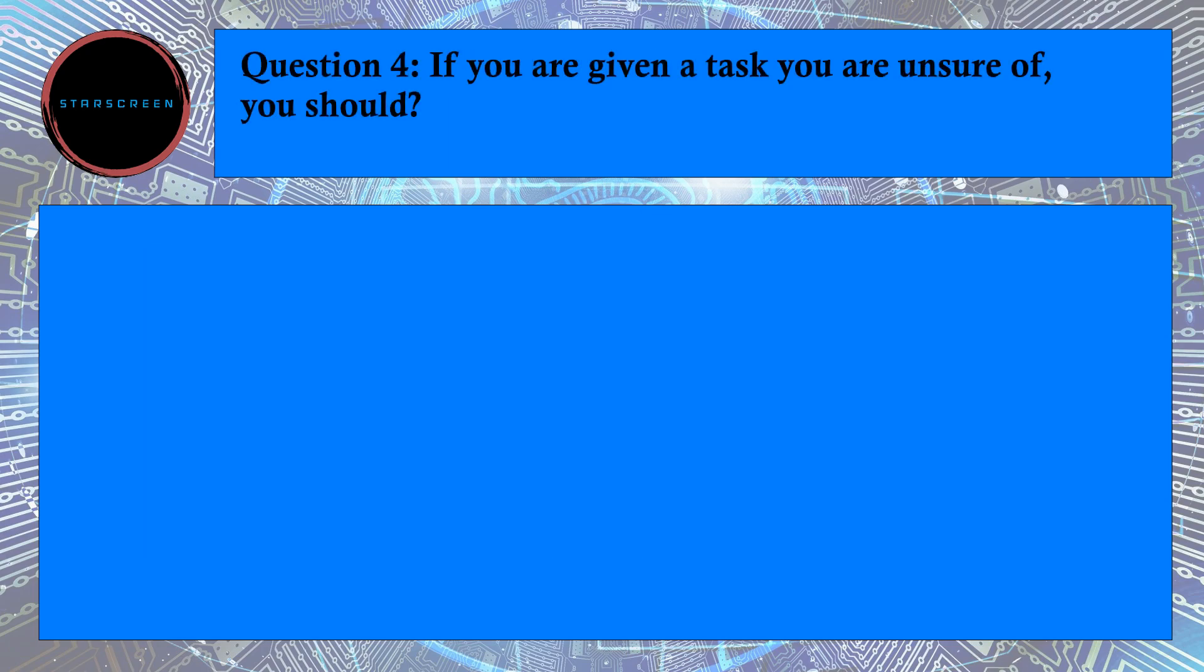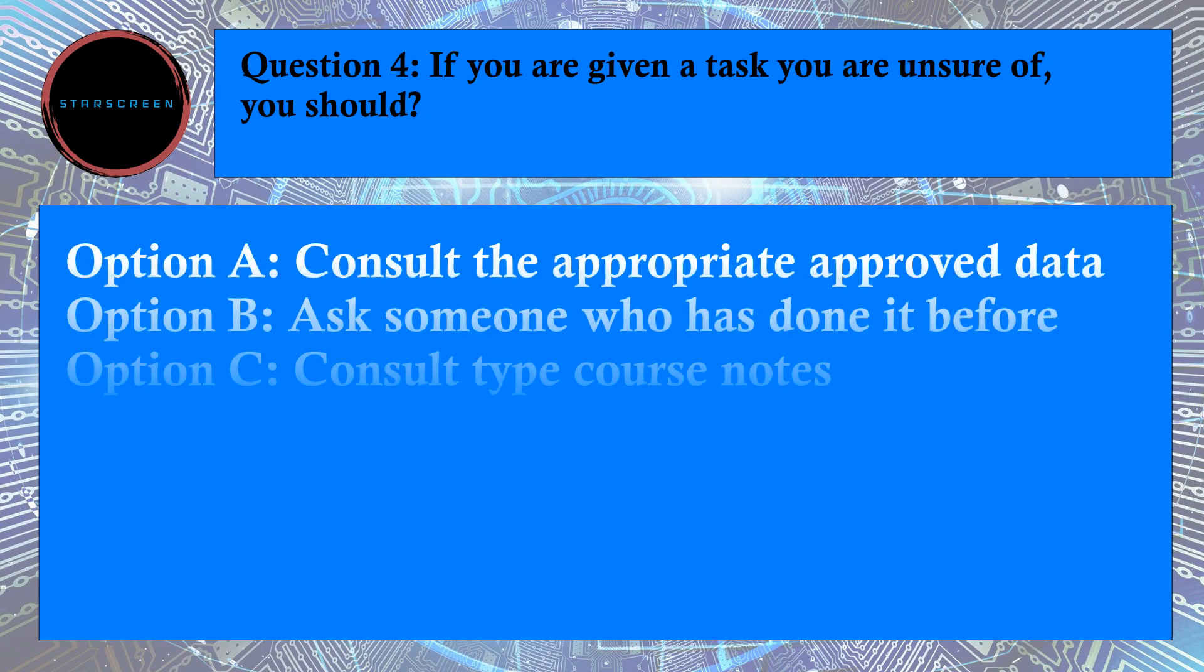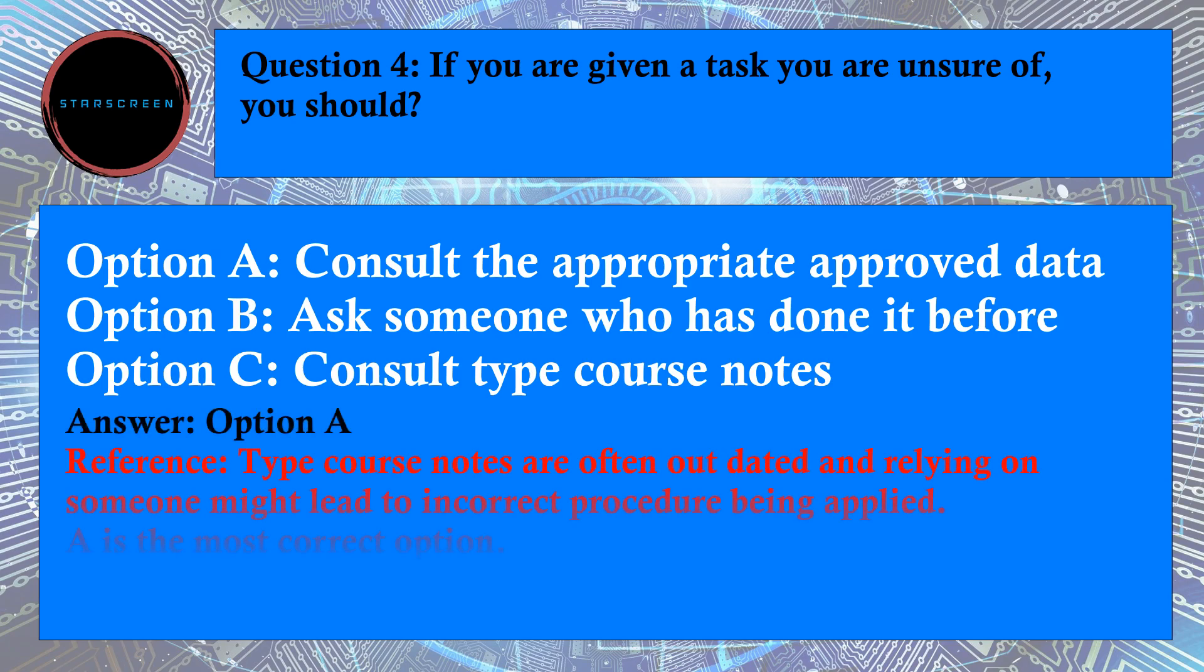Question number 4: If you are given a task you are unsure of, you should? Option A, Consult the Appropriate Approved Data, Option B, Ask Someone Who Has Done It Before, and Option C, Consult Type Course Notes. Correct answer is A, Consult the Appropriate Approved Data. Its answer is pretty obvious because type course notes are often outdated and relying on someone might lead to incorrect procedure being applied. So A is the most correct option.